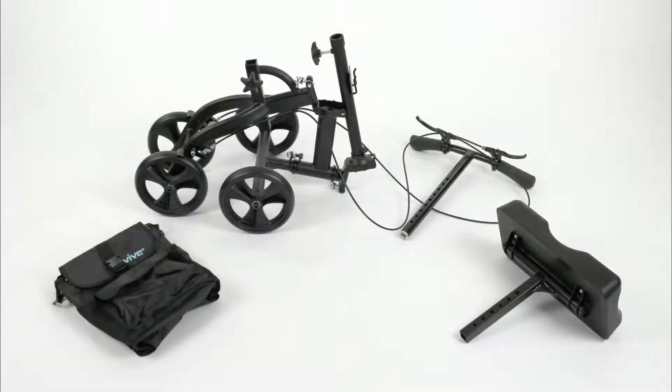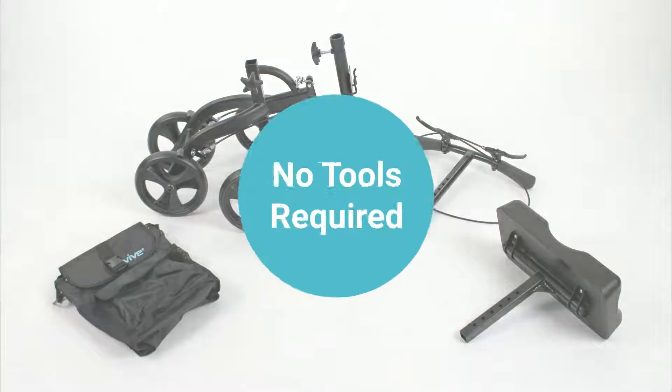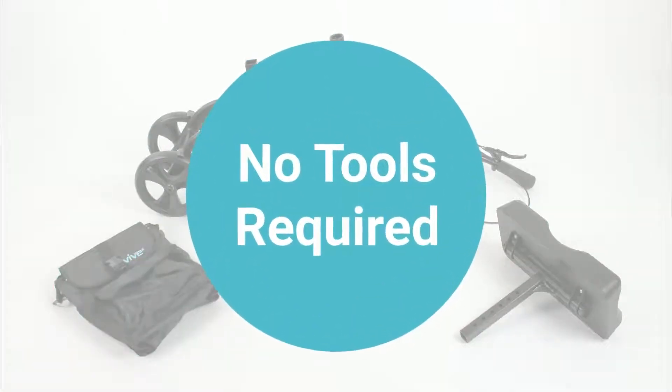Included with your order will be one walker with handles and wheels attached, one knee pad, one bag, two pre-installed adjustment knobs, one brake cable holder. There are no tools required for your knee walker assembly.